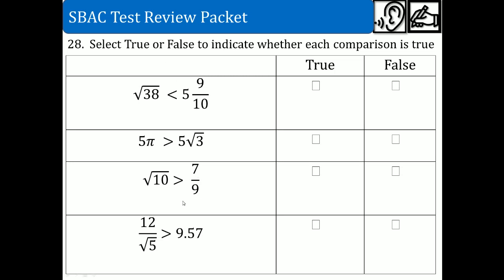Problem 28: select true or false to indicate which comparison is true. For this state test you are not given a calculator, so you have to estimate. The square root of 38 is a little bit above the square root of 36, which is 6, so it's about 6.16. The other value is 5 and 9 over 10, which is 5.9.